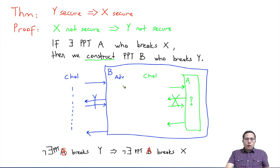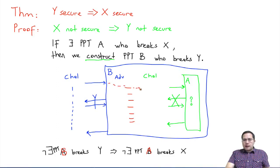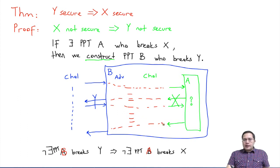B's overall goal is to write its code such that these messages are somehow tied together, so that at the end, if A wins the game for X, hopefully B wins the game for Y.